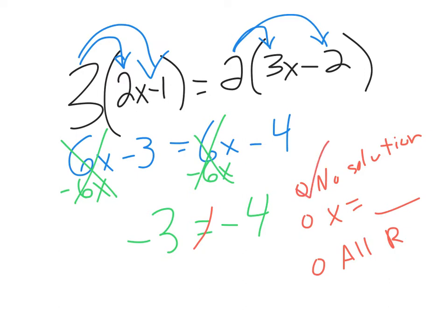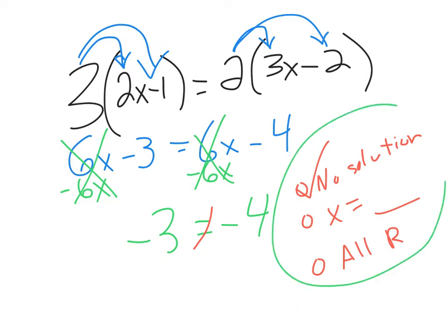There wouldn't be a particular answer — it just doesn't work. If you happen to solve a linear equation like this on your Alex homework or next week's quiz and you get something like this, you just have to check no solution. That's why it's called a contradiction — one side contradicts the other.